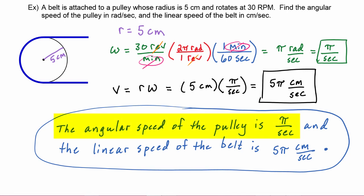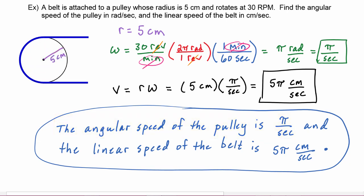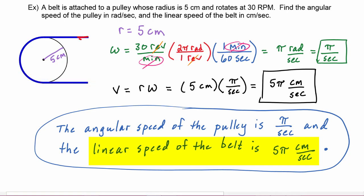Physically, if you were standing at the center of the pulley and turning to keep up with a point traveling on its circle, you'd be turning at a rate of π every second — halfway around every second. The linear speed v = 5π cm/s means a point on the belt travels 5π centimeters every second. Since π is roughly 3, the belt is moving about 15 centimeters every second.